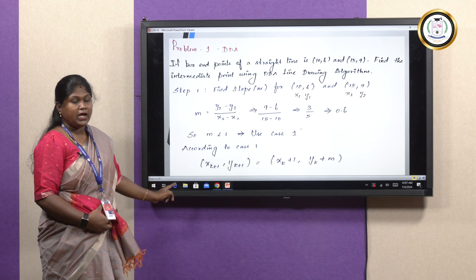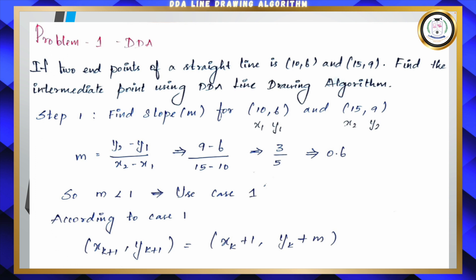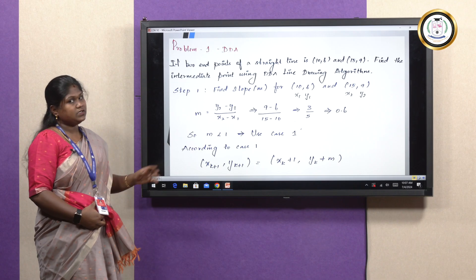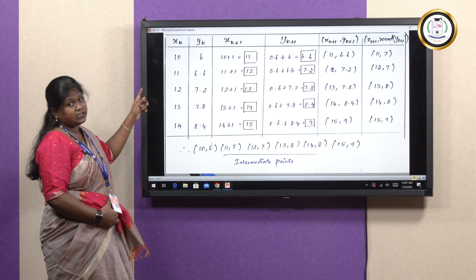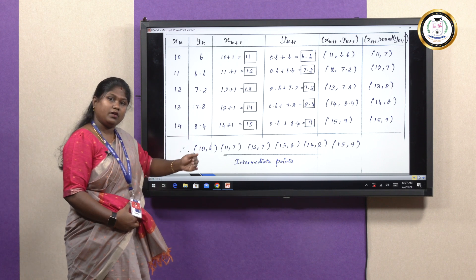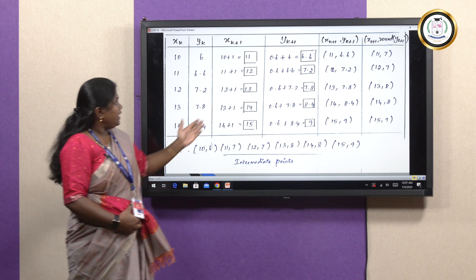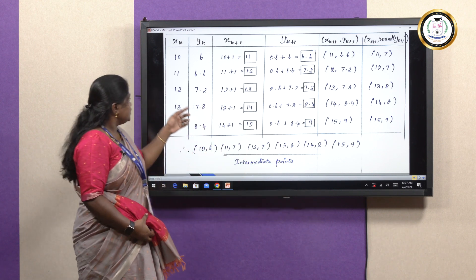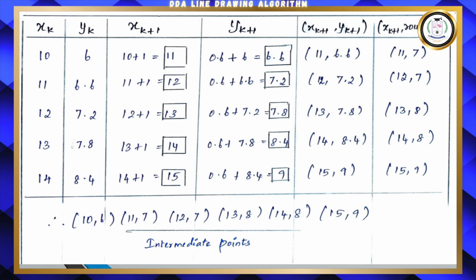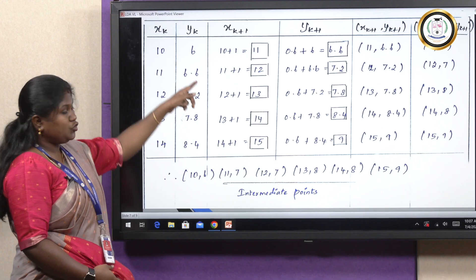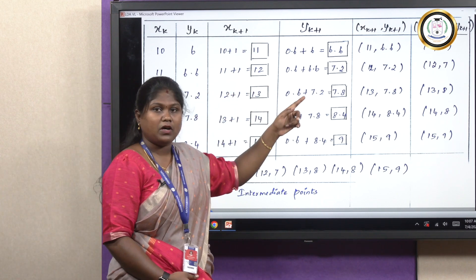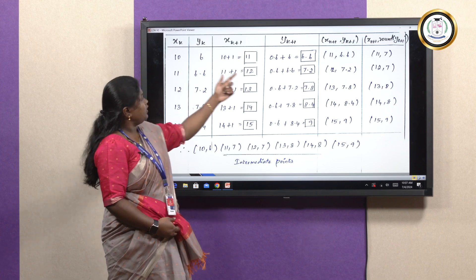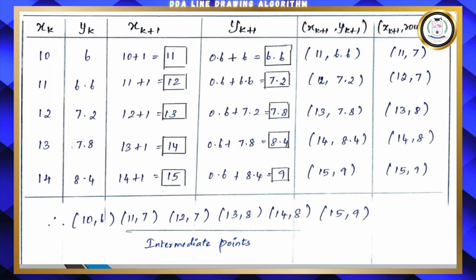As per Case 1, the formula is XK+1 = XK + 1 and YK+1 = YK + M. We use a tabular column to find the intermediate points. The first point is (10, 6) as given. To get the next X value, we add 1: 10 + 1 = 11. For Y, we add the slope: 6 + 0.6 = 6.6. So the next immediate point is (11, 6.6), which rounds to (11, 7). Now taking (11, 6.6) as XK, YK, applying the formula gives X = 12 and Y = 6.6 + 0.6 = 7.2. The next point is (12, 7.2), rounded to (12, 7).